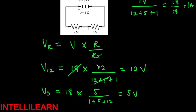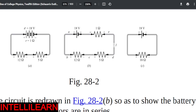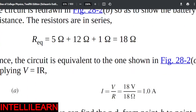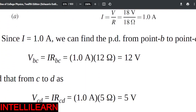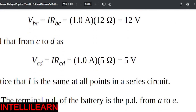So essentially, that resistance — you do its fraction: resistance divided by the total resistance. So it's the same question done another way. We have 12 volts and 5 volts.